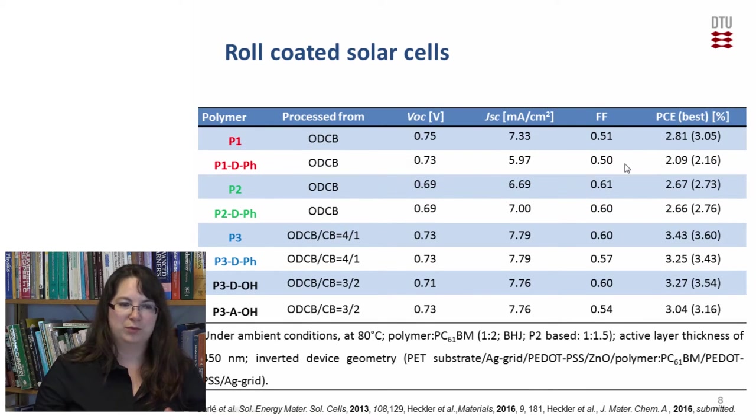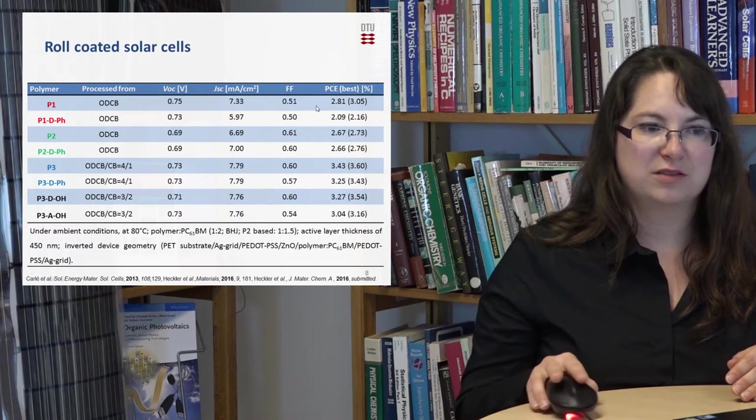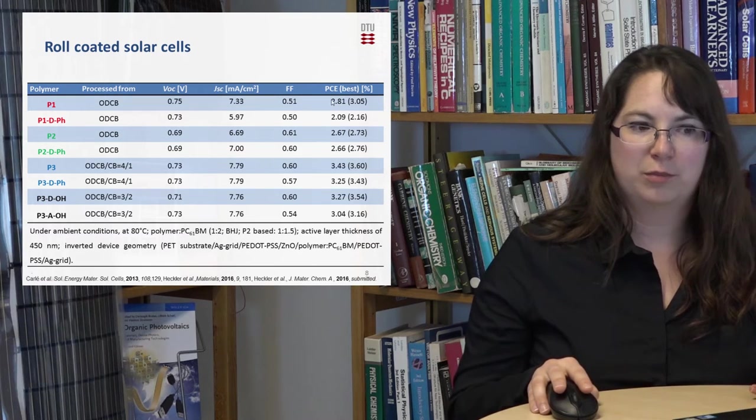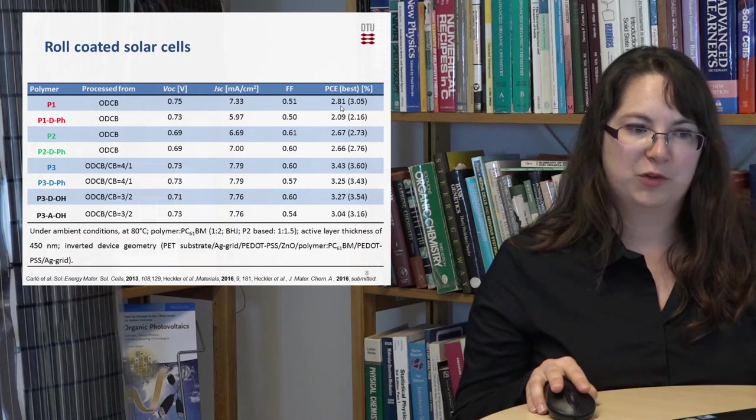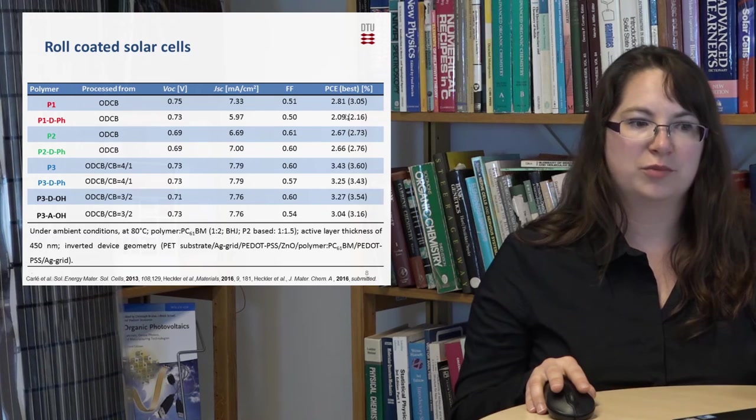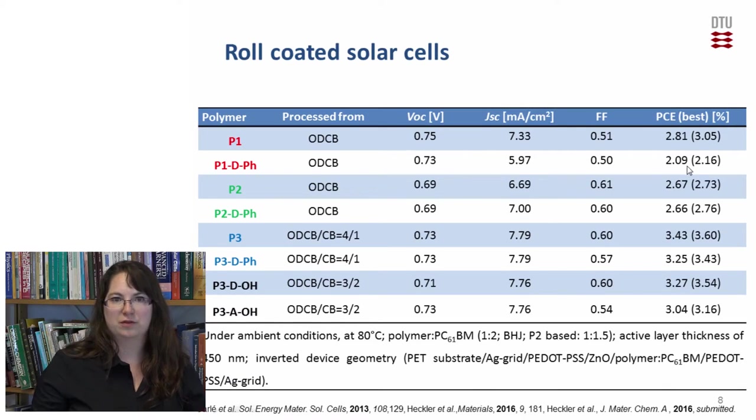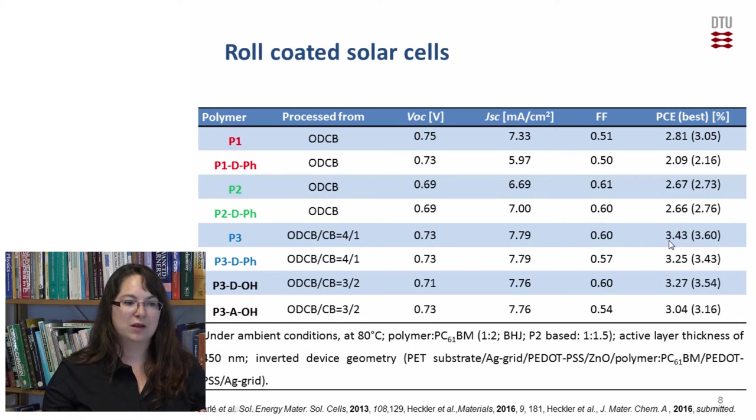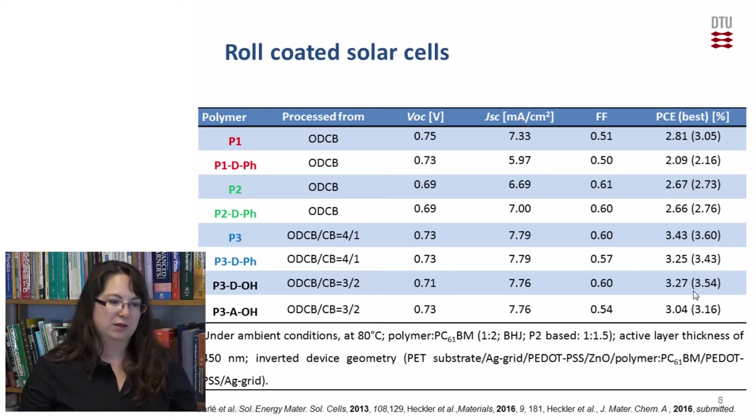The following results could be measured. For P1 the efficiency for the original polymer is with 2.8% quite high in comparison to the manipulated one where it drops to 2.1% so the incorporation of the side chain makes the efficiency drop a little bit. For P2 we cannot see this effect, the efficiencies are about the same. For P3 however we can also see that when we incorporate the phenyl or the alcohol in the donor that we get some small drop of efficiency however when we incorporate the alcohol in the acceptor it drops even more which means it's not so good to incorporate this side chain in this position.